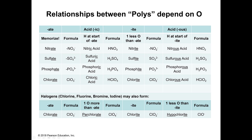The relationship between the polys depends on the oxygen count. Memorize nitrate, sulfate, phosphate, and chlorate — that's only four. Nitrate is NO₃, sulfate is SO₄, phosphate is PO₄, and chlorate is ClO₃. You'll have the polyatomic cheat sheet on the test, but it's really important to know these because the rest come from these four, and these are the ones you'll see quite a bit.